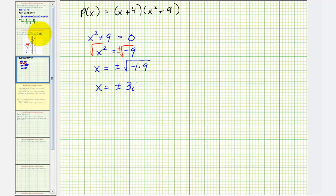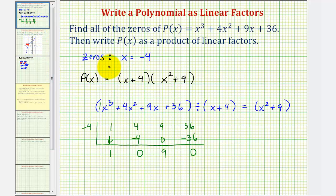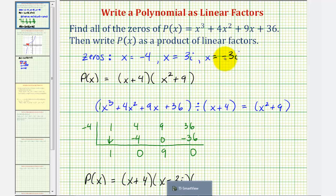So going back to our first slide, we now know the other two zeros. One is x = 3i and the other is x = -3i. Now we can completely factor p(x) into three linear factors. We would have p(x) equals (x + 4)(x - 3i)(x + 3i).